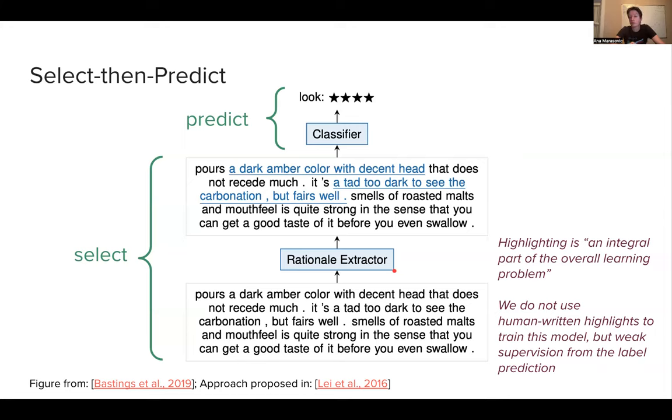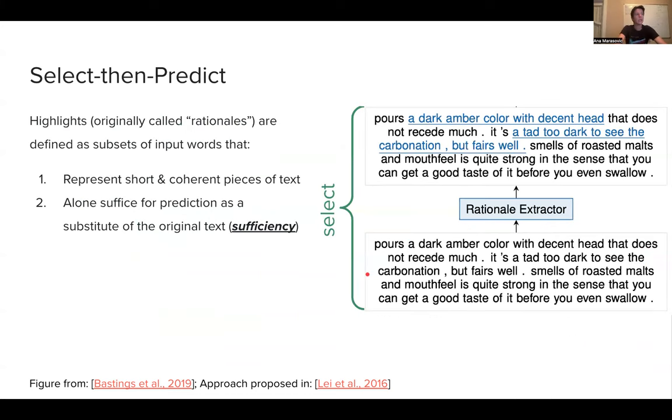Important here is that with select and predict approaches, you're not going to use human written highlights usually to supervise the model, but rather they're going to just use whatever was the predicted label and then back propagate through the entire stack. And this will be a weak supervision for the highlighter rationale extractor. So just based on what we ended up predicting and whether that was a good prediction or not, we can tell to highlight extractor, you gave me good highlights and therefore I was able to predict the sentiment or the highlights were not good. And therefore the loss was huge and you should fix the extraction part.